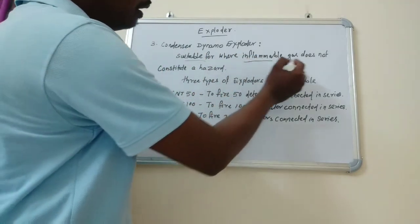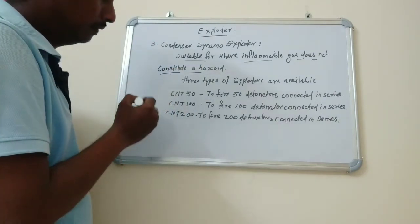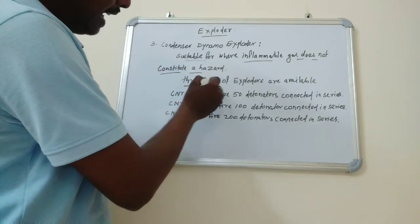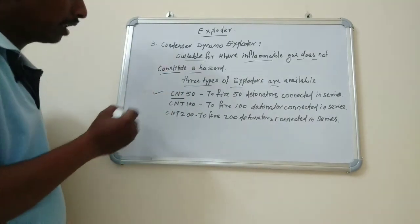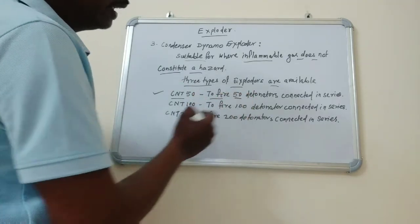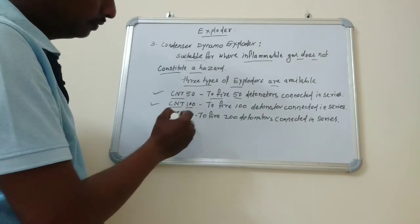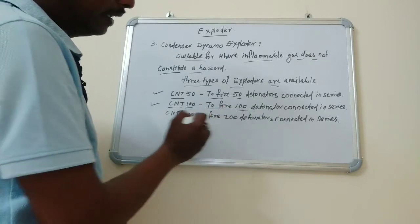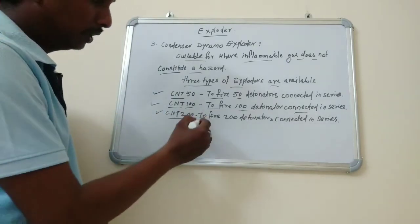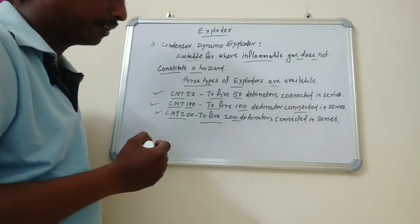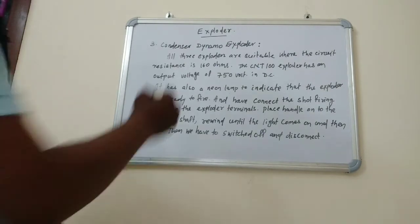Three types of exploders are available: first is CNP50 to fire 50 detonators connected in series, second is CNP100 to fire 100 detonators connected in series, and third is CNP200 to fire 200 detonators connected in series.